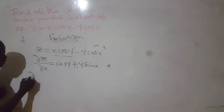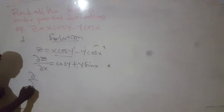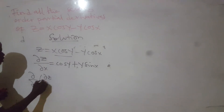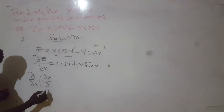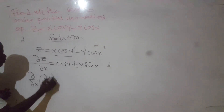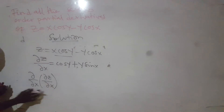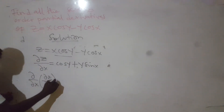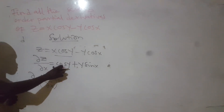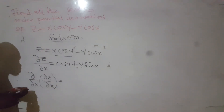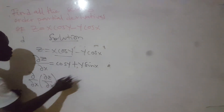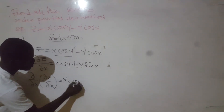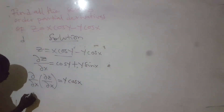Let's differentiate with respect to x. So, we are differentiating the answer we have with respect to x. The cos y gives 0 because a constant, when you differentiate a constant, you get 0. When you differentiate sin x, you get cos x. So here the result is y cos x.